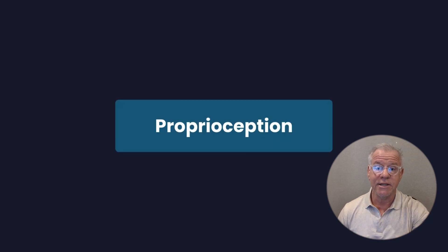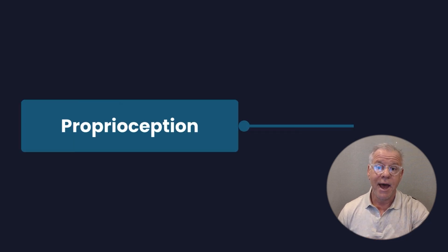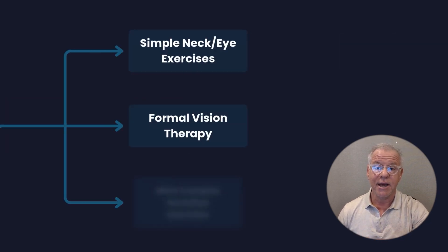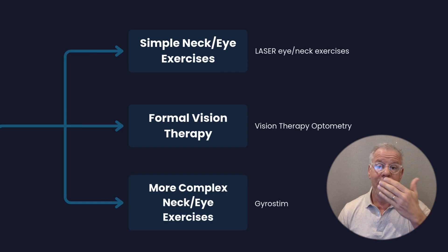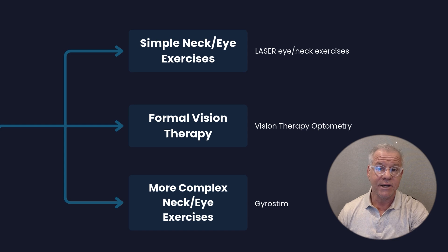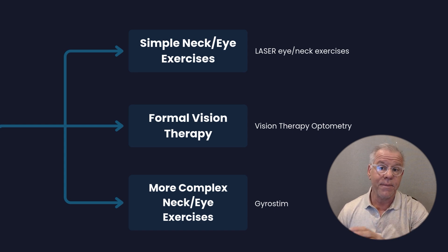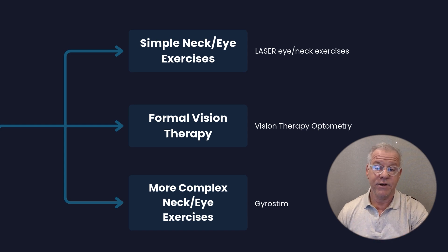Proprioception, or position sense, is another thing you've got to be thinking about — basically the ability to determine which end is up. We've got simple neck and eye exercises you can consider doing at a very low level. You can graduate to formal vision therapy, optometry, or even more complex things like a gyro stem machine.